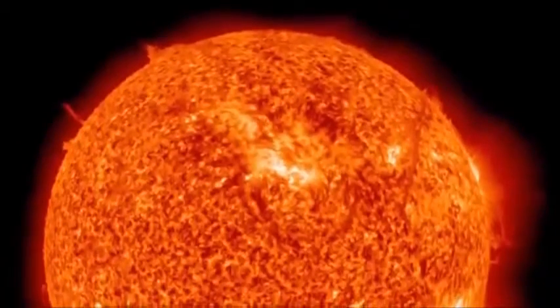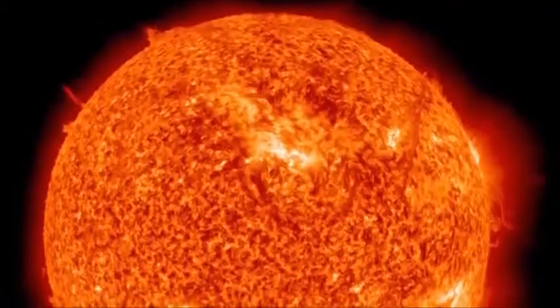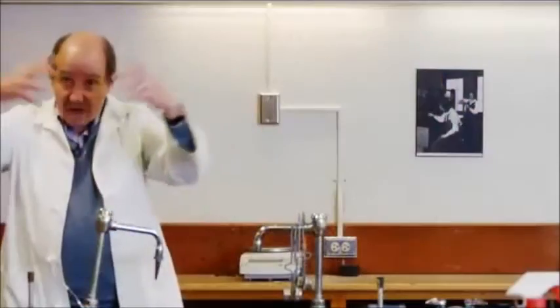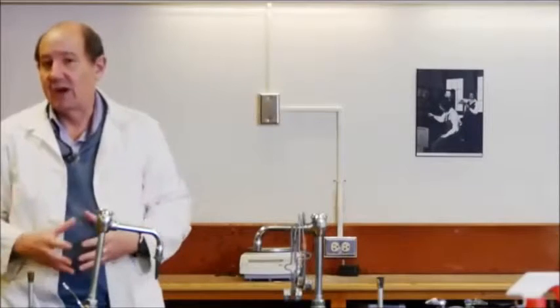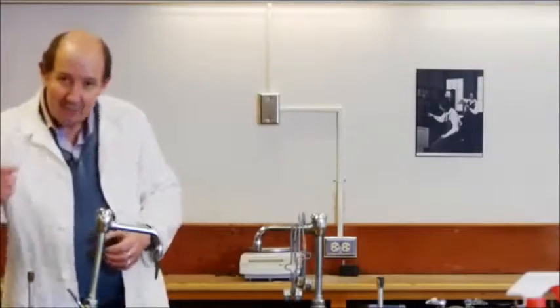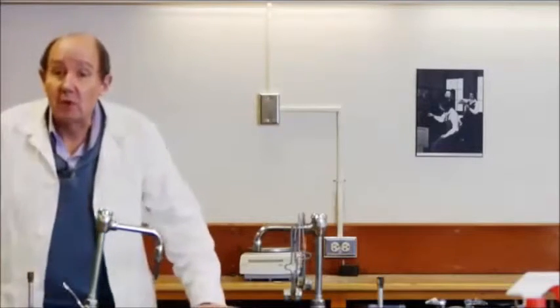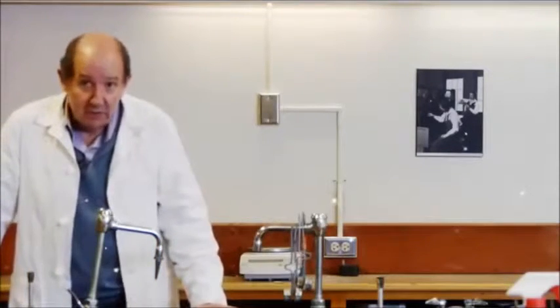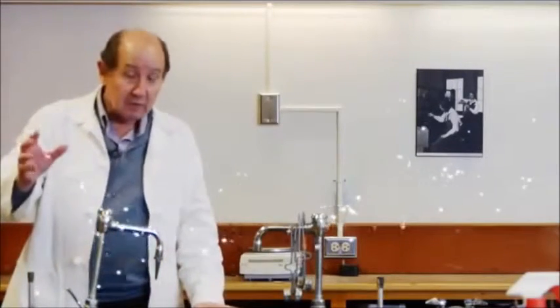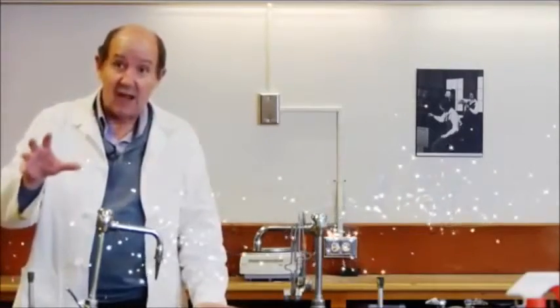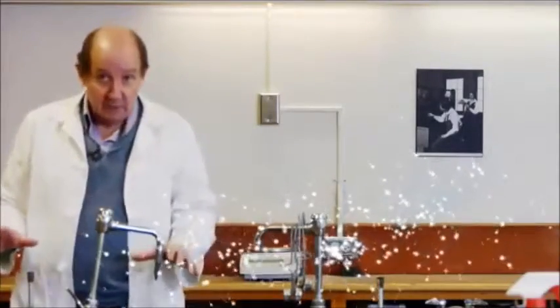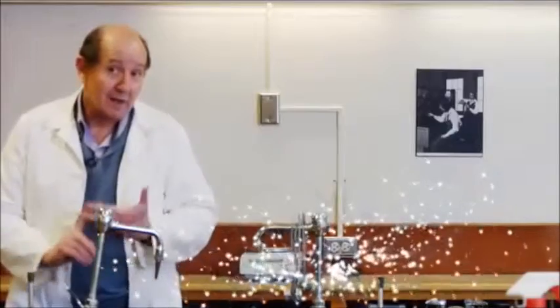Our sun formed, like any other star, from the collapse of a cloud of matter under the pressure of gravity. That collapse, like many others, was probably triggered by a huge supernova explosion somewhere in our region of the Milky Way. That supernova explosion also seeded this cloud with lots of new materials from other supernovae and from dying stars.